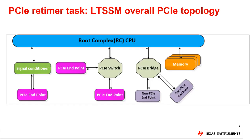PCIe is a point-to-point topology, with separate links from the root complex to each element within the topology. A PCIe link can vary from 1 to 32 lanes. Non-PCIe devices are isolated through PCIe bridges, to isolate legacy interfaces such as PCI or other non-PCIe compliant devices. Additionally, PCIe devices connected to the root complex negotiate specific data rates based on the capability of each entity. A PCIe retimer, similar to a PCIe switch, needs to behave like an endpoint to the root complex and at the same time act as a root complex interfacing to the endpoint.